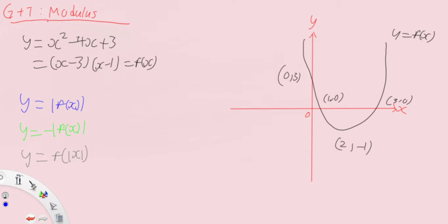Same idea — basically whatever you're going to get, positive or zero y-values. The y-value is either zero or positive. So whatever is already positive or zero will remain as it is, but for the negative values, because you add a modulus, you now do the flipping upwards. As such, the region between x equals 1 and 3 would be reflected about the x-axis.